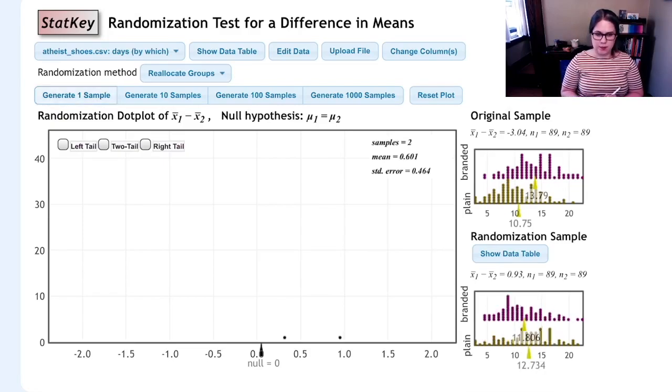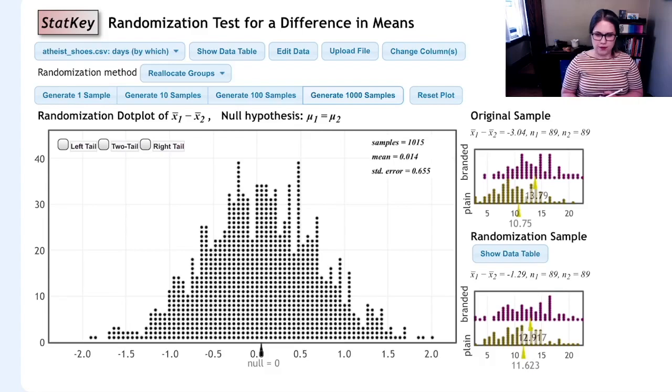If I generate one sample again, then StatKey mixes up those labels again, finds a difference in means and puts another dot on the plot. I could keep doing this, clicking one sample, one sample, one sample. I could be lazy and click generate 10 samples, or I could be really, really lazy and click generate a thousand samples. I'm going to take a screenshot of this for my notes.